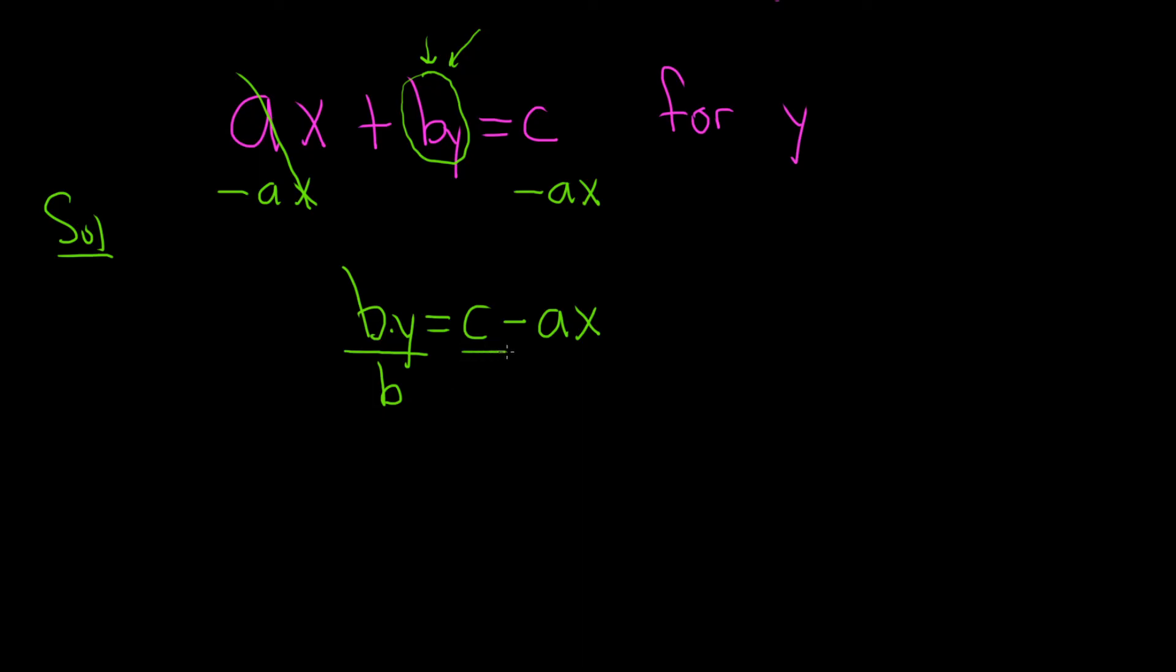Divide both sides by b. The b's cancel, so we have y = (c - ax)/b. That would be the final answer.